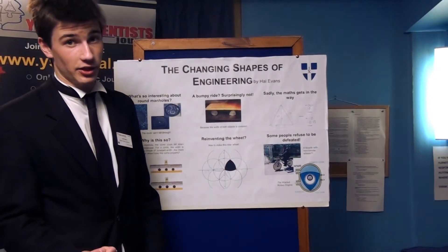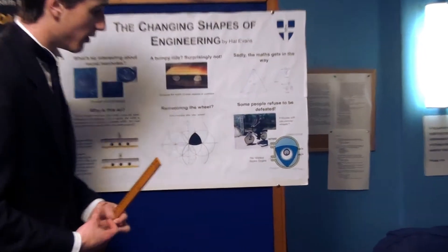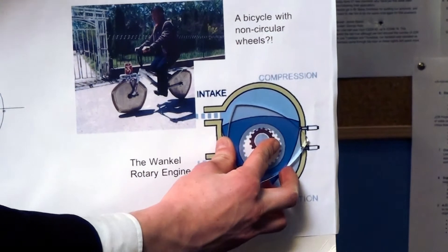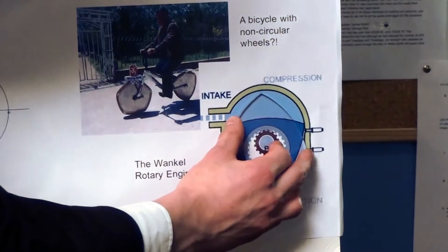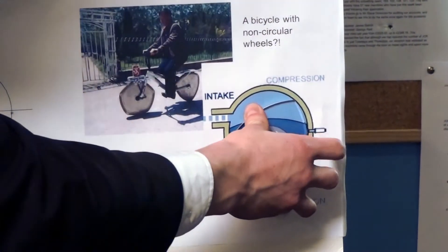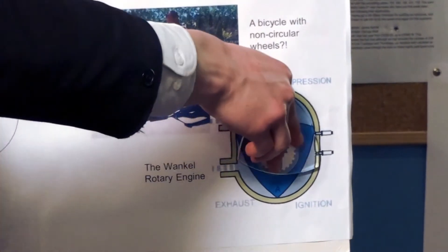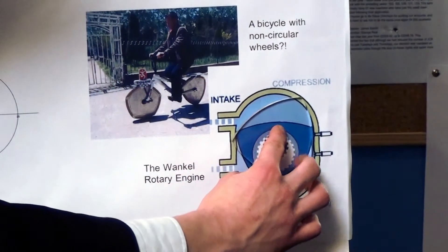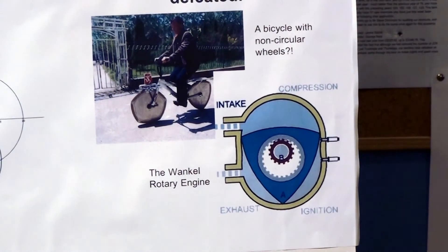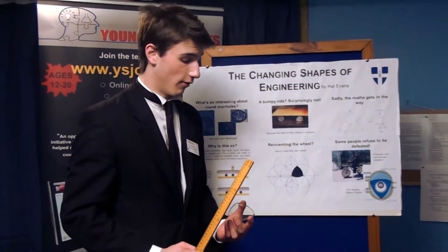What's more, there are other engineering applications for which the Reuleaux triangle is used, such as the Wankel rotary engine. You have an intake here of hydrocarbons, and as this rotates, the hydrocarbons are compressed. Then as it gets round, they are compressed further, the spark plug ignites that fuel, it forces this round, and then the exhaust gases escape. You actually get three explosions per one rotation of this device, compared to a normal piston engine where there is only one explosion per two revolutions of the crankshaft.